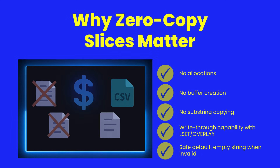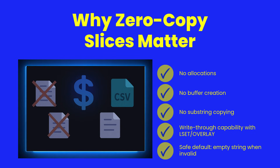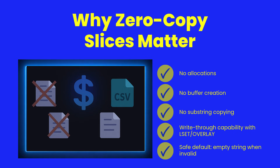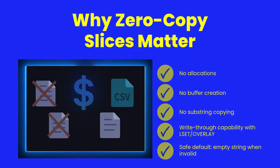Traditional substring operations allocate new memory every time. In business workloads with millions of lines, CSV rows, log entries, and delimited data structures, copies add up fast. String views avoid that entirely. They borrow the slice directly from the underlying buffer, giving you zero overhead substring extraction. And when you write through a view using lset or overlay, you are writing directly back into the source string, modifying only the slice you selected.